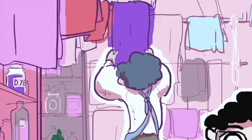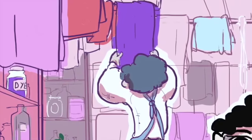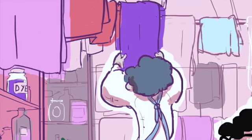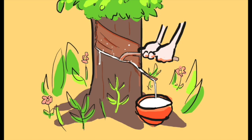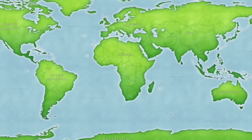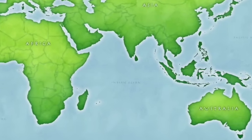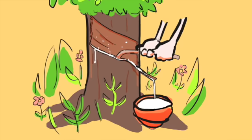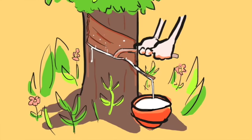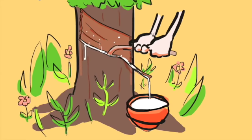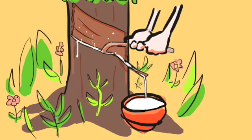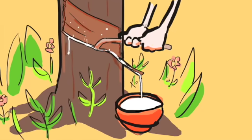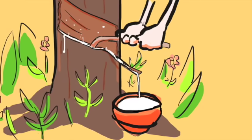Now, to understand Charles' story properly, you've got to know where rubber comes from. It comes from the rubber trees in hot countries like Malaysia and Indonesia. When you make a cut in the trunk of the rubber tree, a white fluid called latex drips out of the tree and you can collect it in buckets. This latex is then turned into rubber.